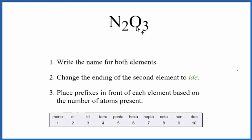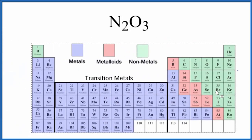To write the name for N2O3, we need to look on the periodic table to figure out what kind of compound we have here.